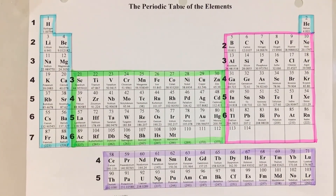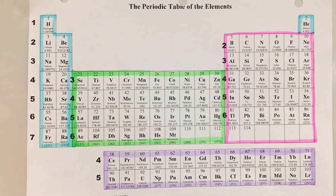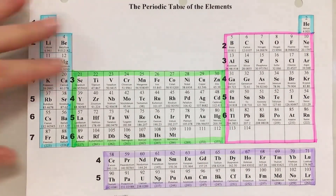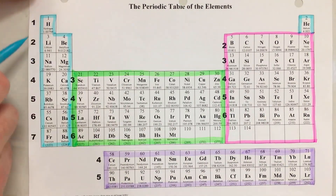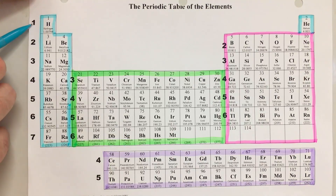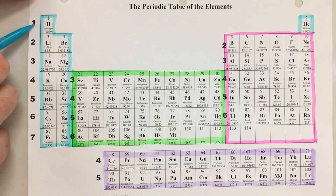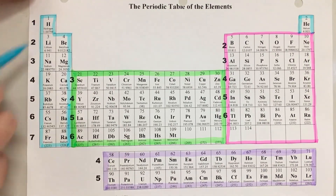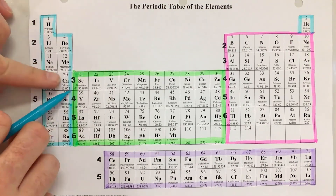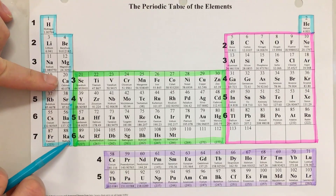This is a quick tutorial on how you can use your periodic table to help you do quantum numbers. There are four quantum numbers. The first quantum number is what energy level your electron is in. If you take a look at the numbers on the side — 1 through 7 — those correspond to your energy levels.